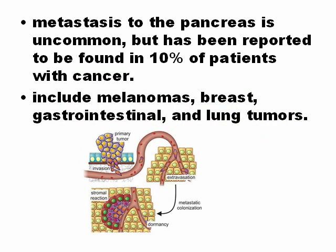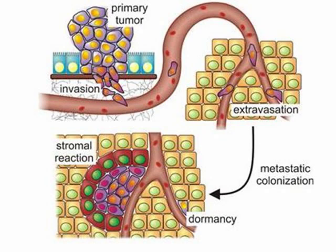Metastasis to the pancreas is uncommon, very rare. Some cancers that can metastasize to the pancreas are melanoma, breast, gastrointestinal, and lung tumors. But it is not very common for cancers to metastasize to the pancreas — contrary to the liver, where metastasis is very common.